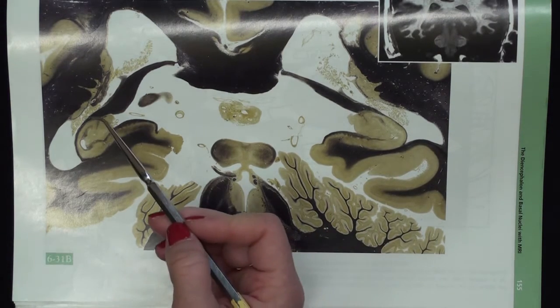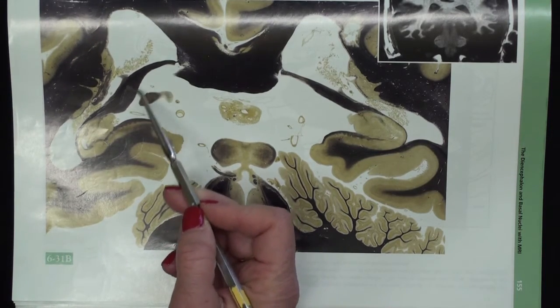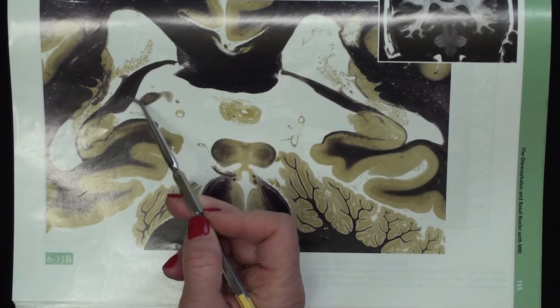And the finger-like projections are going to come together and form a thicker structure known as the crus of the fornix.